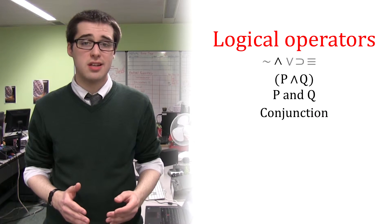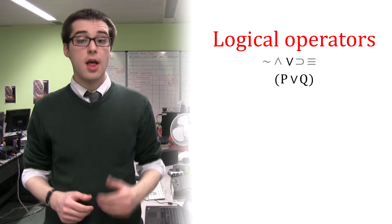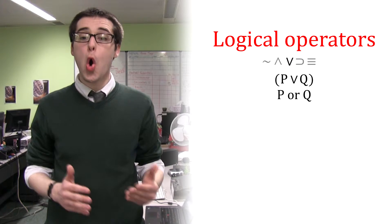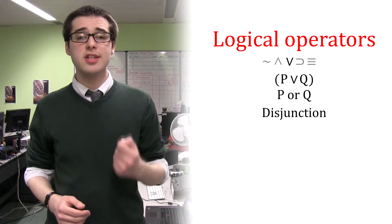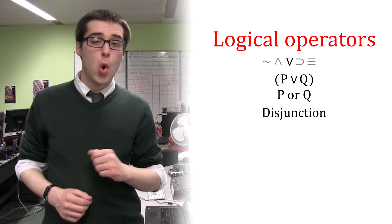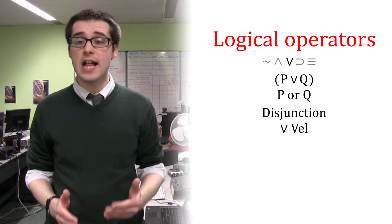And is represented using the caret symbol. This means P or Q, and shows the disjunction of P with Q.